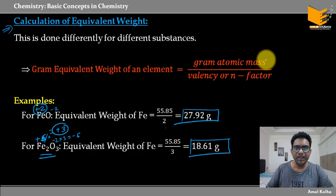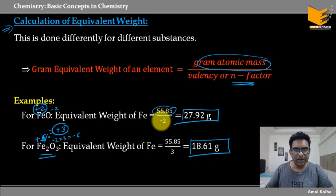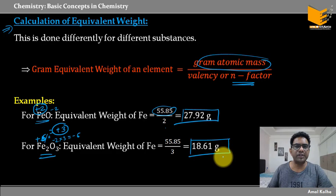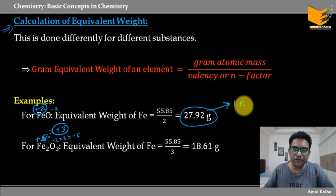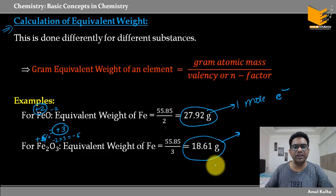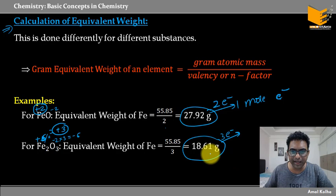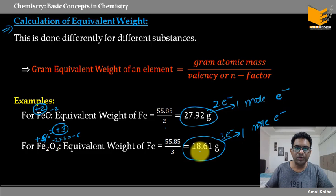The meaning: agar maa ne 27.92 gram Fe (from FeO) liya, that is going to give me 1 mole of electrons, because each Fe gives 2 electrons. Aur agar 18.61 gram Fe (from Fe₂O₃) leta ho — each Fe gives 3 electrons — toh half mole × 3 = also 1 mole of electrons. So both give 1 mole of electrons — that is the meaning of equivalent weight.